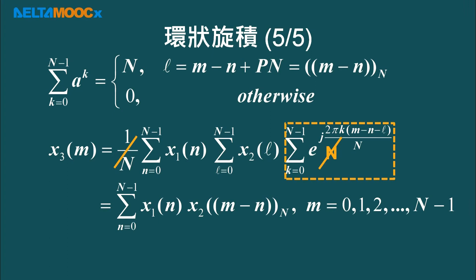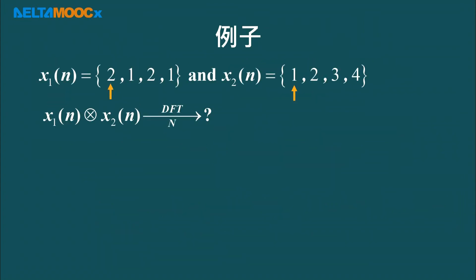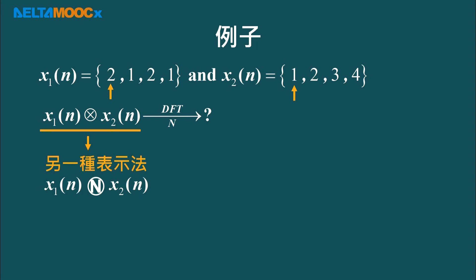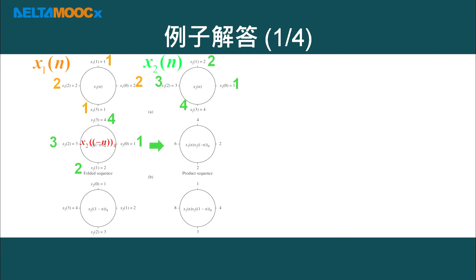Thus we have derived the circular convolution result: S3(m) = Σ S1(n) · S2((m-n) mod N). This confirms that when S1 and S2 are convolved on the circular (periodic) axis, the result is S3(m). This is the proof of circular convolution. As an example, we have two signals S1 = [2,1,2,1] and S2 = [1,2,3,4], and we perform their N-point DFT circular convolution.